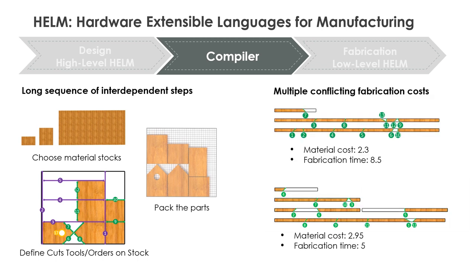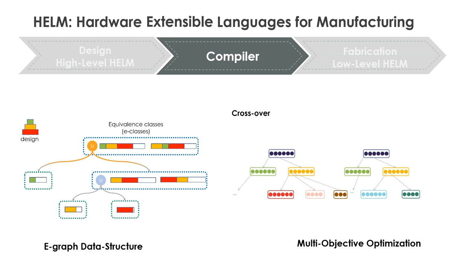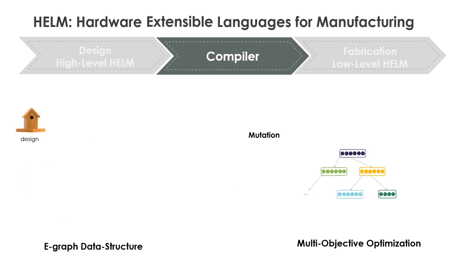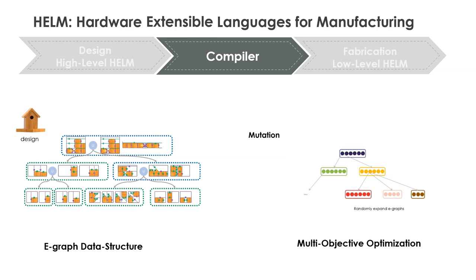The second challenge is that there are multiple conflicting objectives. There are two possible fabrication plans for this bookcase: the first uses less material than the second, but the second can be executed in less time, as the layout of the parts allows for part stacking or use of a smaller number of machine setups. We solve these challenges by combining eGraph data structures from programming languages literature with genetic methods for multi-objective optimization.